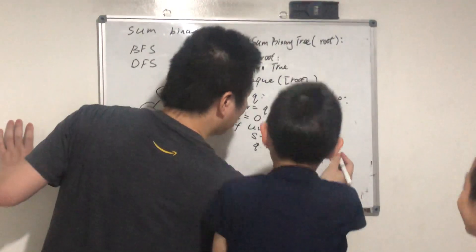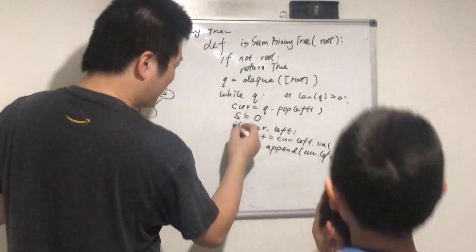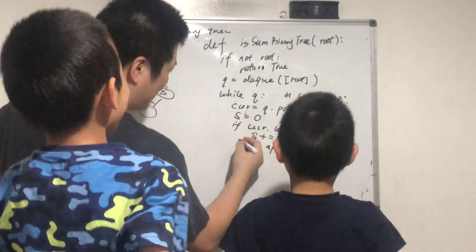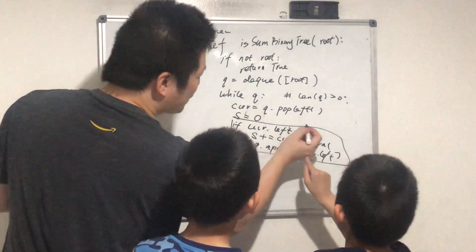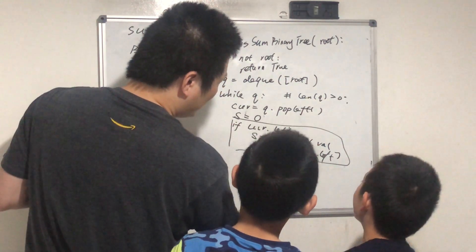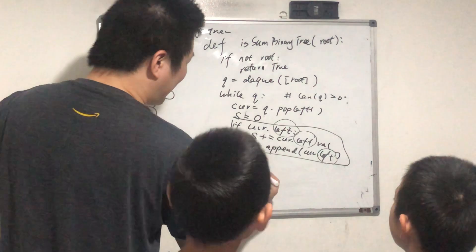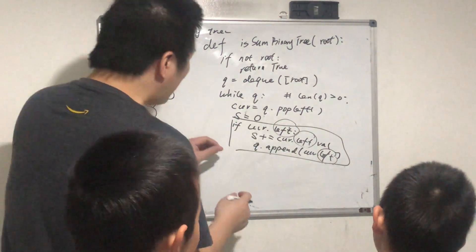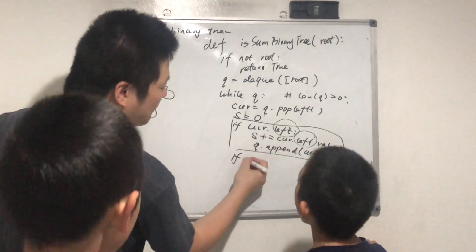Okay, so basically you copy and paste this and change it to current.right. Okay, I'm not going to write it again. And then if this node is not a leaf node, what should I do? If current.left or current.right...